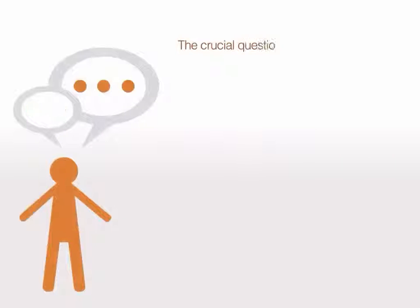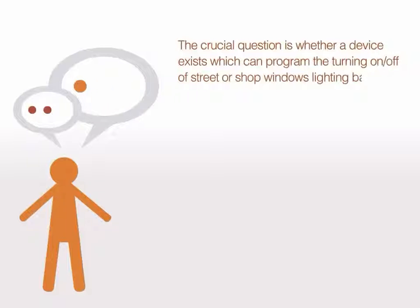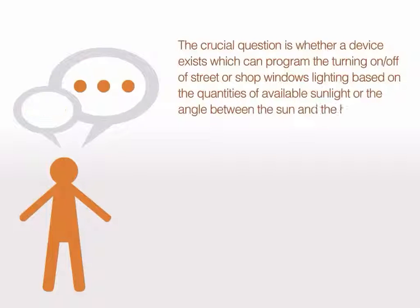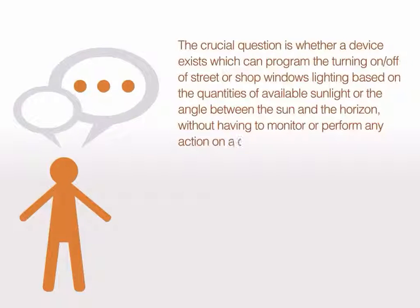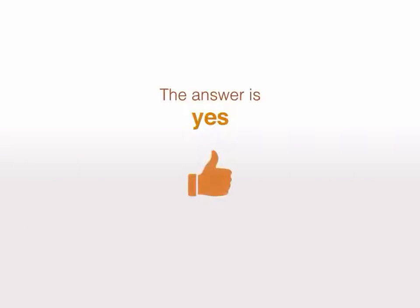The crucial question is whether a device exists which can program the turning on or off of street or shop window lighting based on the quantities of available sunlight or the angle between the Sun and the horizon, without having to monitor or perform any actions on a daily basis. The answer is yes.